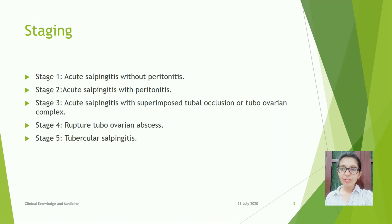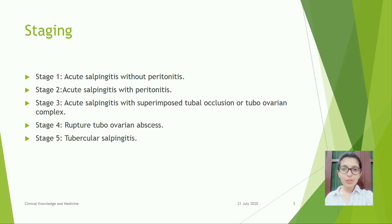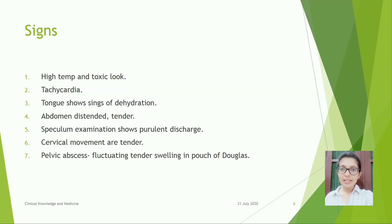Staging — total of 5 stages: Stage 1: Acute salpingitis without peritonitis. Stage 2: Acute salpingitis with peritonitis. Stage 3: Acute salpingitis with superimposed tubal occlusion or tubo-ovarian complex. Stage 4: Ruptured tubo-ovarian abscess. Stage 5: Tubercular salpingitis.